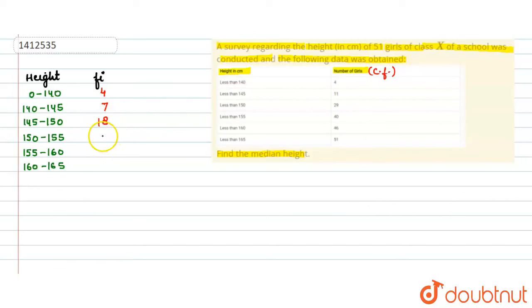Now, we will talk about number of girls. 4 minus 0 is 4. 11 minus 4 is 7. 29 minus 11 is 18. 40 minus 29 is 11. 46 minus 40 is 6. 51 minus 46 is 5.